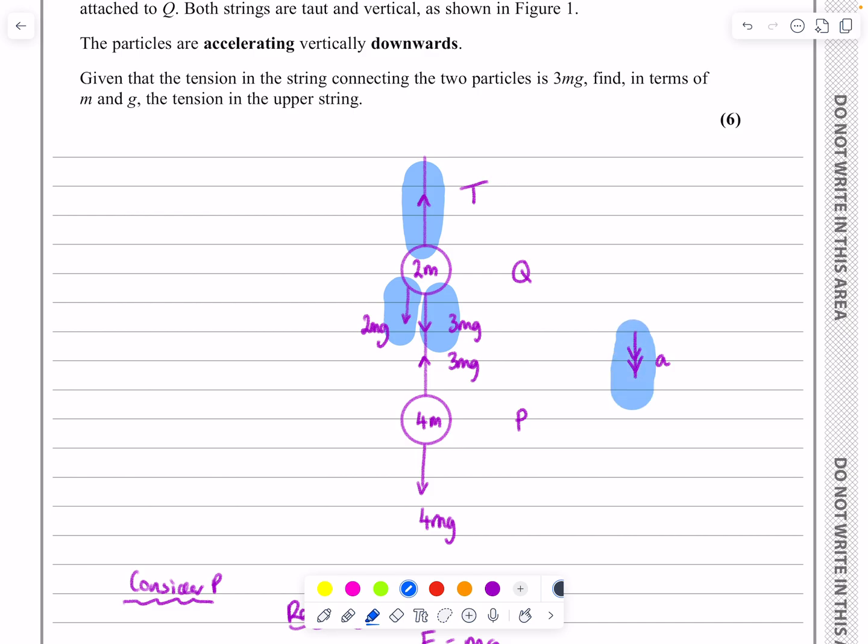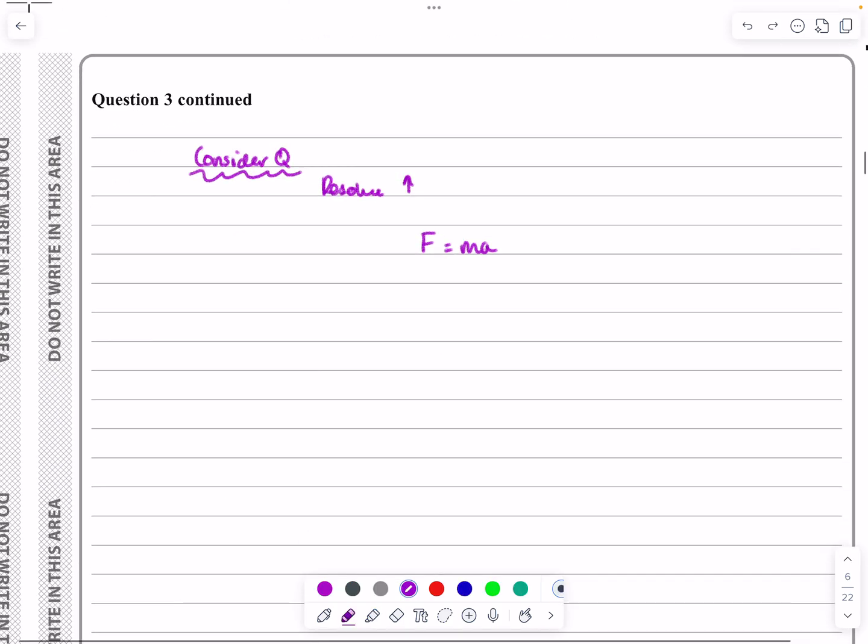So if I now do F equals MA for that one, we're going to have 3mg plus 2mg minus the tension equal to mass times acceleration.